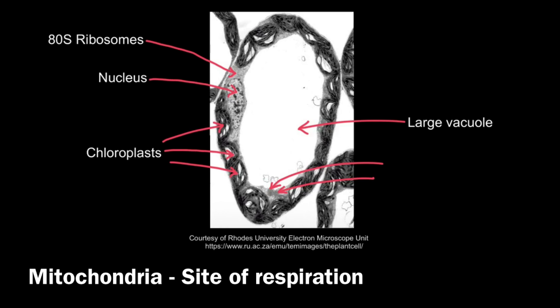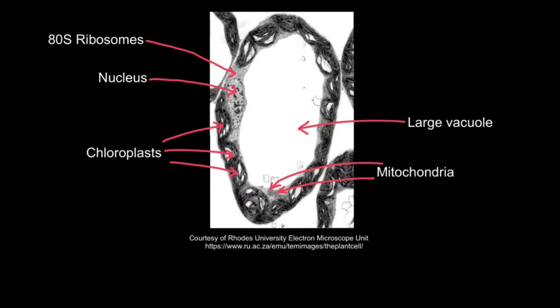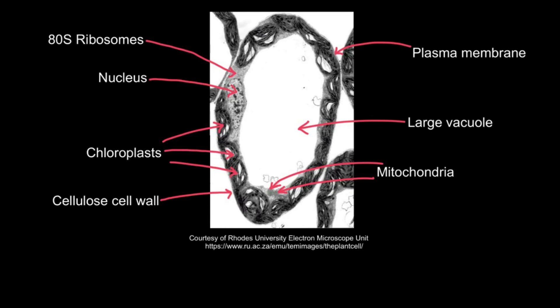Both photosynthesis and protein synthesis require energy in the form of ATP, which comes from respiration. Here I've labeled the mitochondria, which are the site of respiration. Finally, albeit very small, it is possible to observe the cellulose cell wall — the outermost layer of the cell — and the plasma membrane found just inside of it; it's a tiny line if you look really carefully.